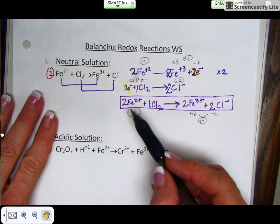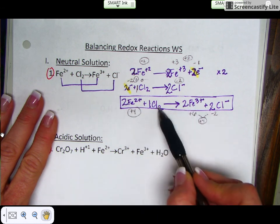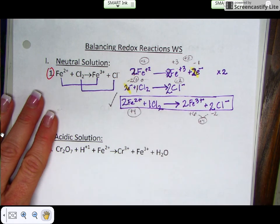Then check to make sure your atoms are equal. I have 2 irons, 2 irons, 2 chlorines, and 2 chlorines. So you are done. That is a balanced redox reaction. Thank you.